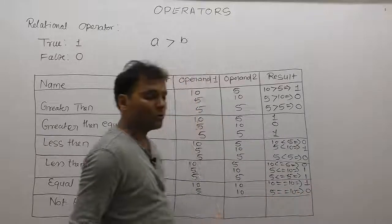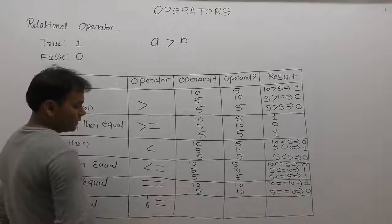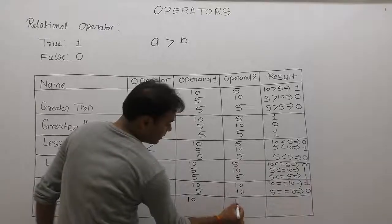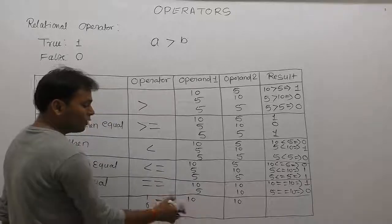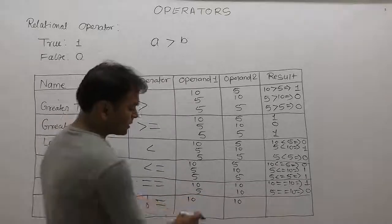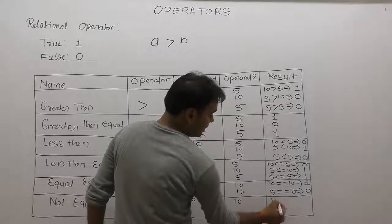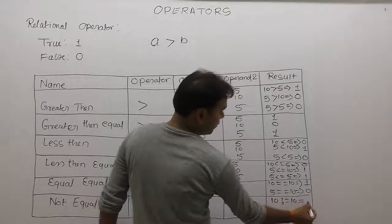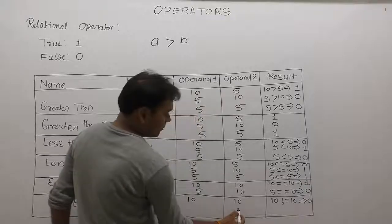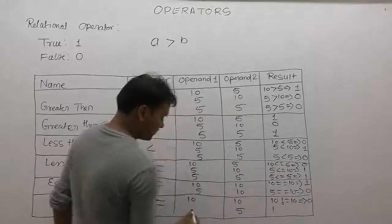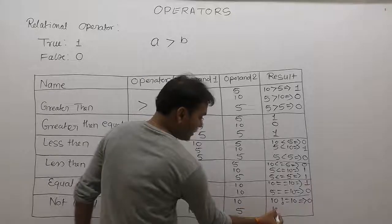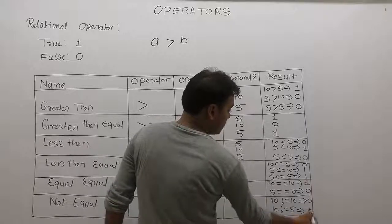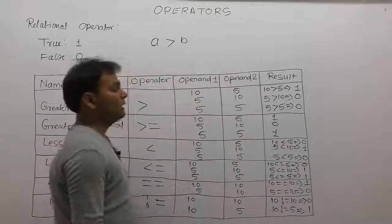Not equal to is just the reverse of equal equal. If the first operand value is different from the second operand, the result is true; if they are the same, the result is false. Example: ten not equal to ten — both are equal, therefore false, means zero. Ten not equal to five — the values are different, so the result is true.